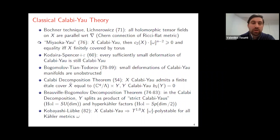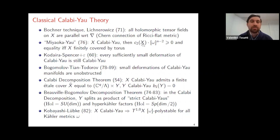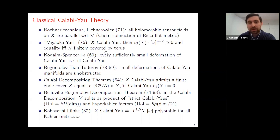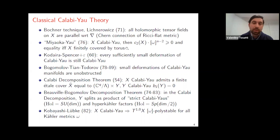Another consequence, usually called the Miyaoka-Yau inequality — though Miyaoka proved only a special case and the general case is due to Yau — states that if you have a Calabi-Yau manifold and take the second Chern class of X, wedge it against the Kähler form to the power n−2 and integrate, the number you get is always non-negative. Furthermore, it's zero if and only if your Calabi-Yau is finitely covered by a torus. So for a compact Kähler manifold to be finitely covered by a torus, it's necessary and sufficient that the first and second Chern classes vanish.